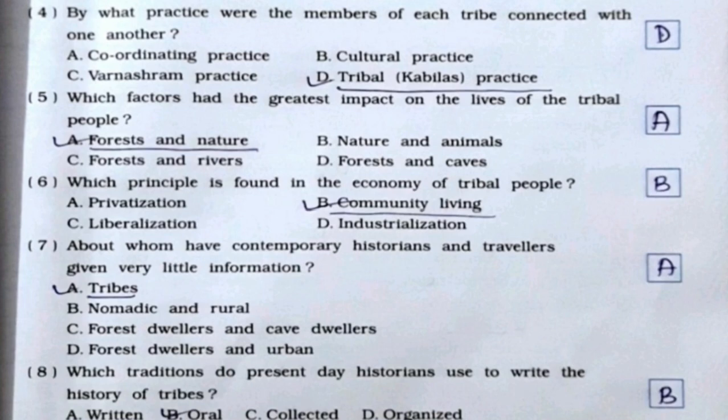Fourth one: By what practice were the members of each tribe connected with one another? It's option number C. Fifth: What had the greatest impact on the lives of the tribal people? It's option number A, forests and nature. Sixth one: Which principle is found in the economy of tribal people? It's option number B, community living.